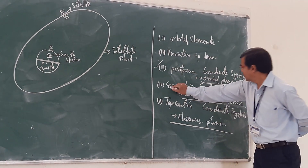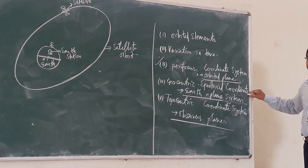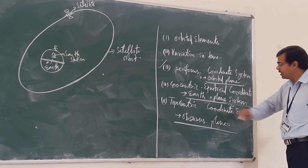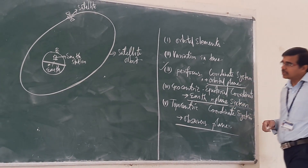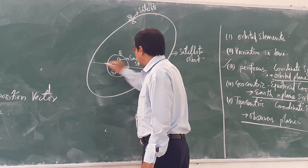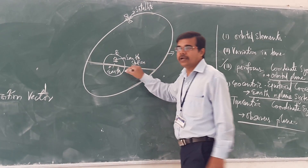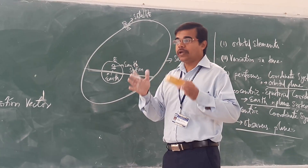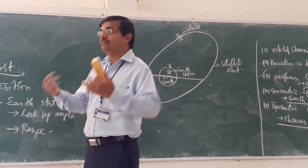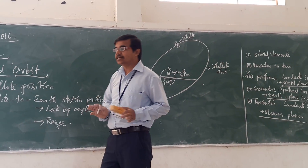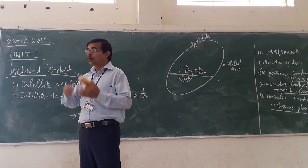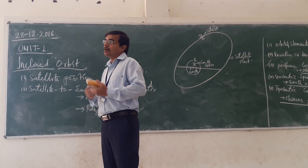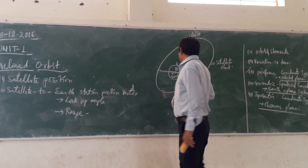The next parameter is the geocentric equatorial coordinate system. This is your Earth equatorial plane. We have to consider the equator — the equatorial plane. Since we are talking about space, which is three-dimensional, we consider different two-dimensional parameters to represent that three-dimensional space.